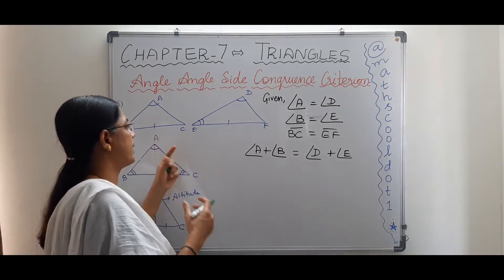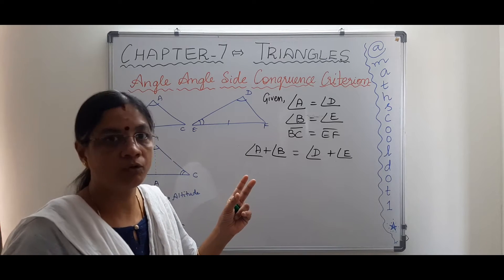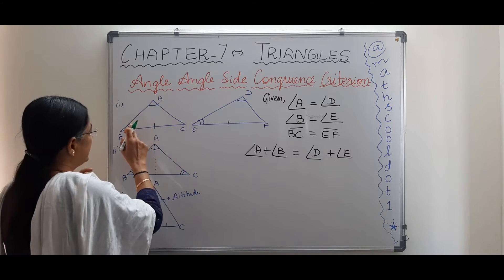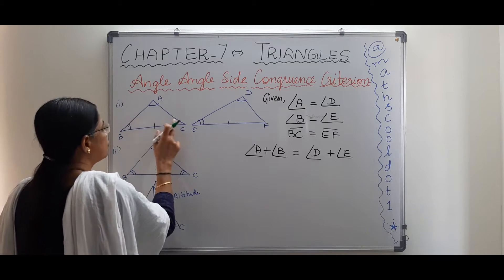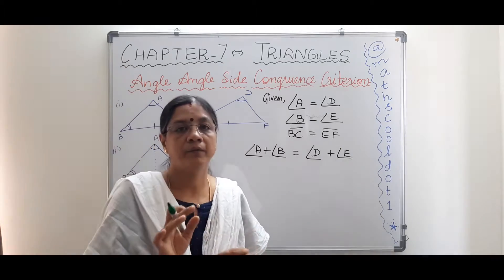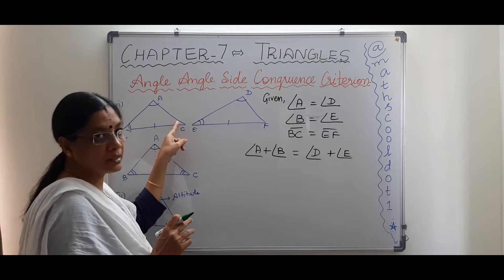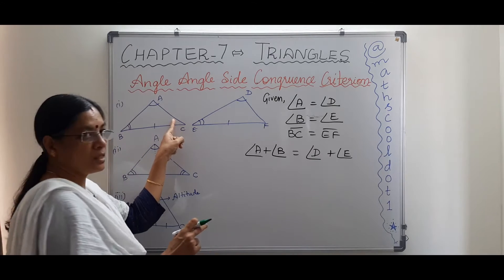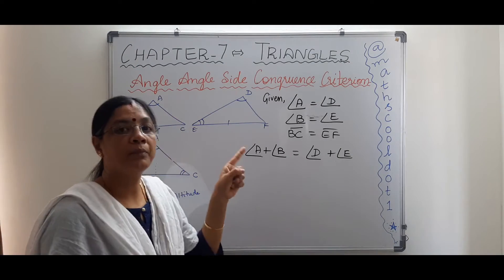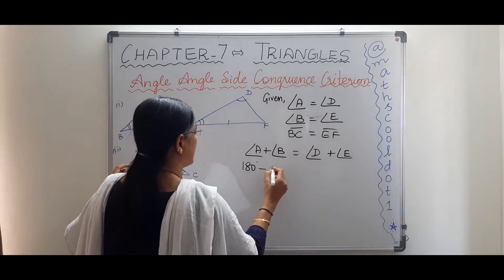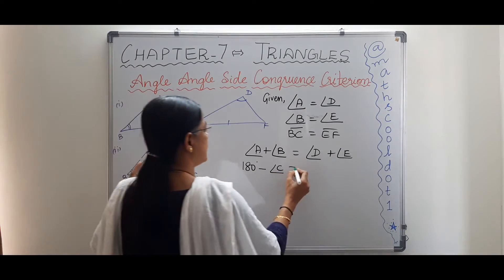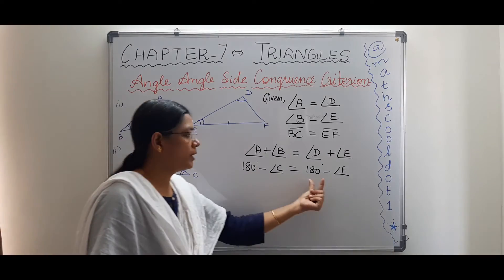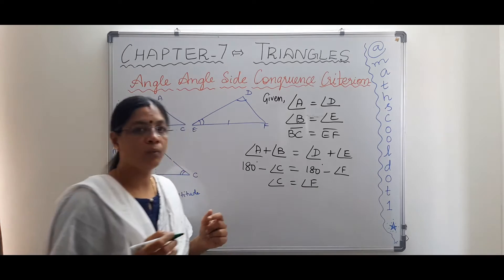I have angles A and B here with a side, and according to the angle sum property in a triangle, all angles sum to 180 degrees. So angle A plus angle B equals 180 minus angle C, and similarly angle D plus angle E equals 180 minus angle F. Since angle A plus angle B equals angle D plus angle E, the 180s cancel and we get angle C equals angle F.